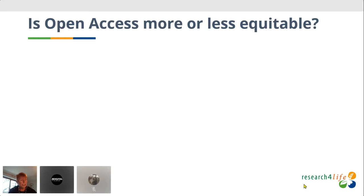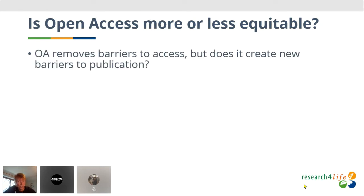However, the transition to an open access publishing business model does not automatically benefit researchers wanting to publish their articles. The evidence tells us that in some ways open access simply moves the barrier to a different place. The risk is that if we don't take action, an open access paradigm might end up being less equitable and less inclusive than the system we currently have.